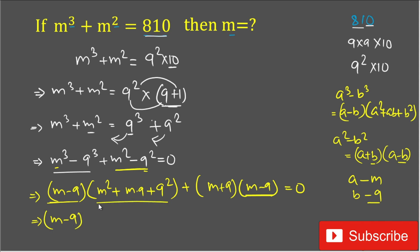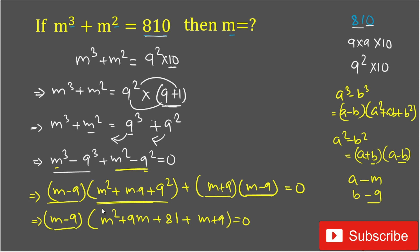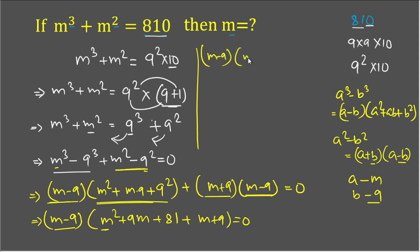After factoring out (m - 9), the remaining expression is m² + 9m + 81 plus (m + 9). Combining like terms: 9m + m = 10m, and 81 + 9 = 90. So we get (m - 9)(m² + 10m + 90) = 0.